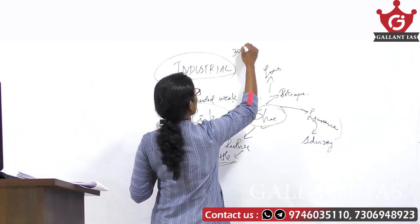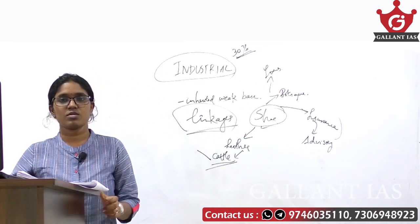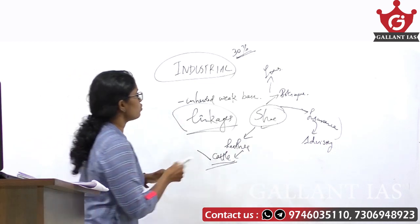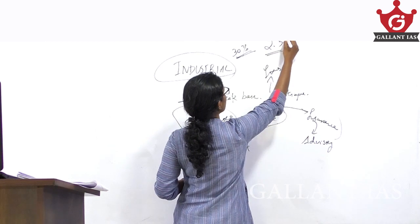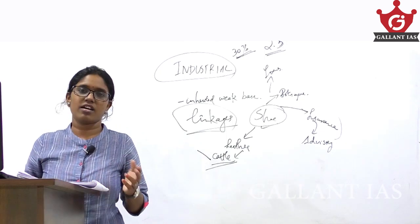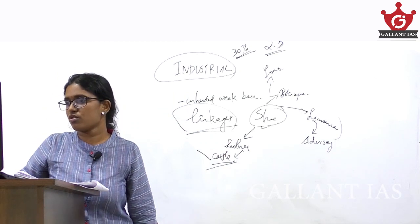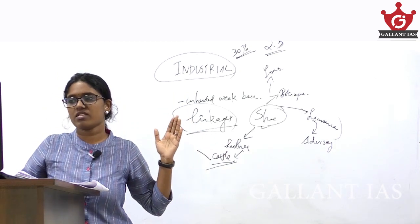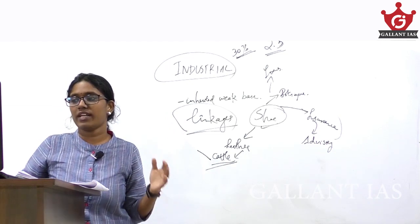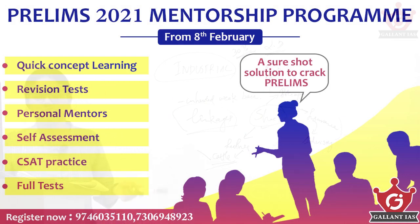The industrial sector contributes nearly 29-30% to India's Gross Value Added. Overall industrial growth in 2019-20 is estimated at 2.5%, compared to 6.9% in the previous year. This decline is due to restrictions imposed by the COVID lockdown. The manufacturing sector is estimated to grow at only 2% in 2019-20.